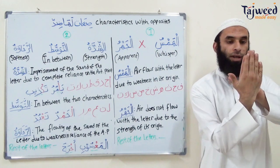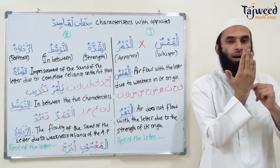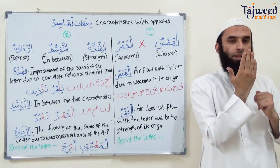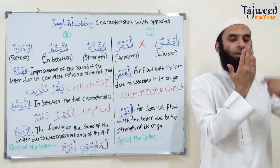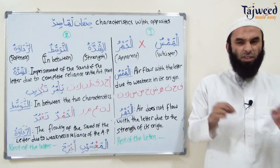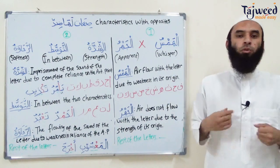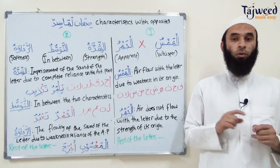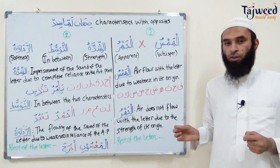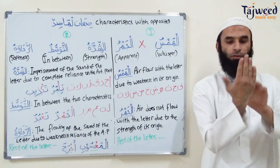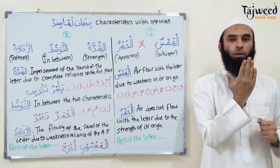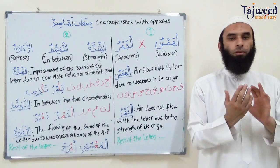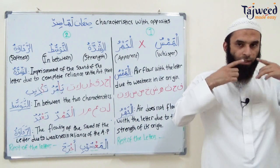For example, the first letter is Fa. If we put our hand in front of us and say 'Ath' — you feel that air flows with it. Same with other Hams letters: 'Ath,' air flows. So whenever we pronounce these ten letters, the sukoon will be the clearest — air will flow due to weakness in their origin. The opposite is al-Jahra: air does not flow with those letters due to their strength in origin. If you put your hand and say 'Ab,' you notice no air flows — there may be a little due to breathing, but no significant amount.